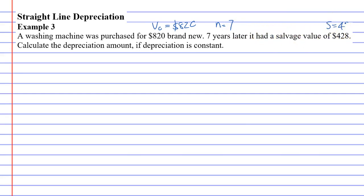So salvage was $428. It wants you to calculate the depreciation amount, wants you to calculate capital D if depreciation is constant. Now this little bit at the end when it says if depreciation is constant, that just means it